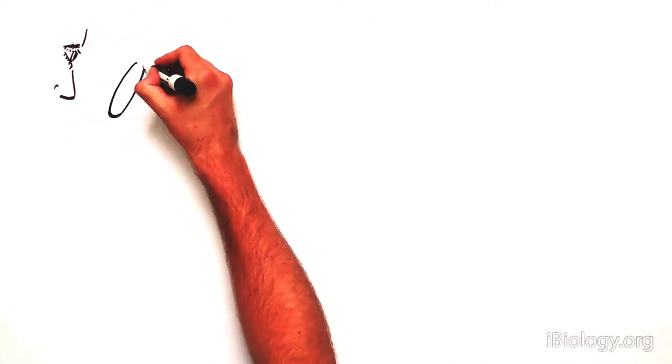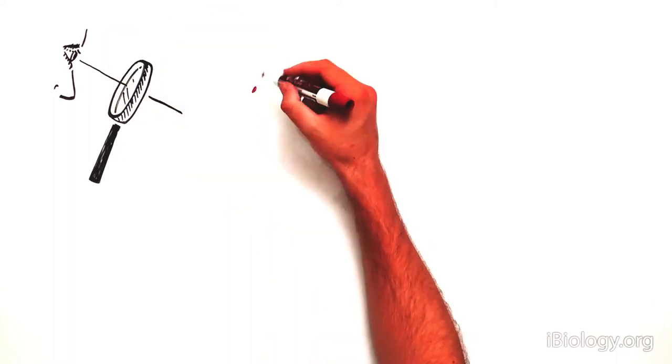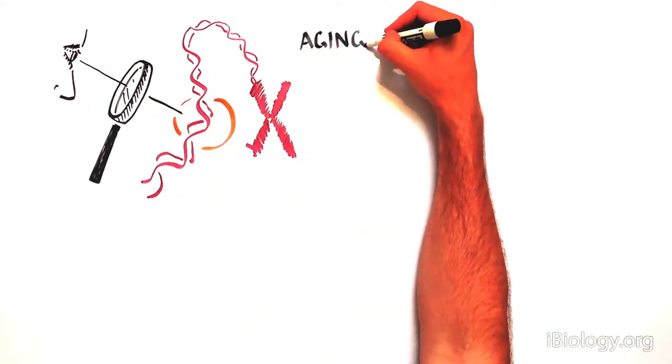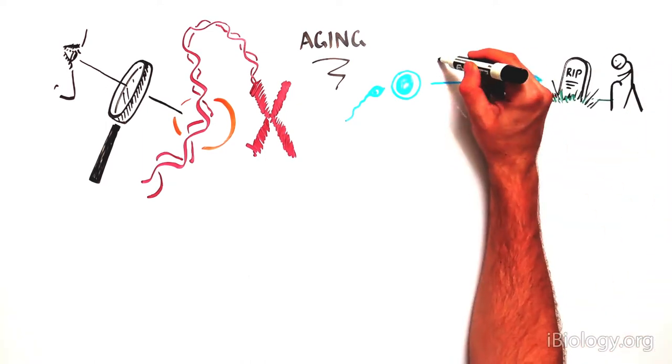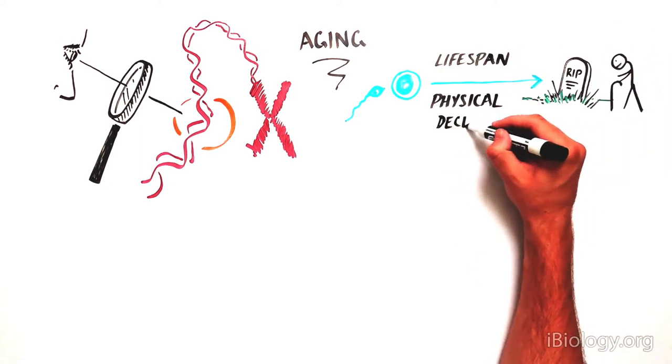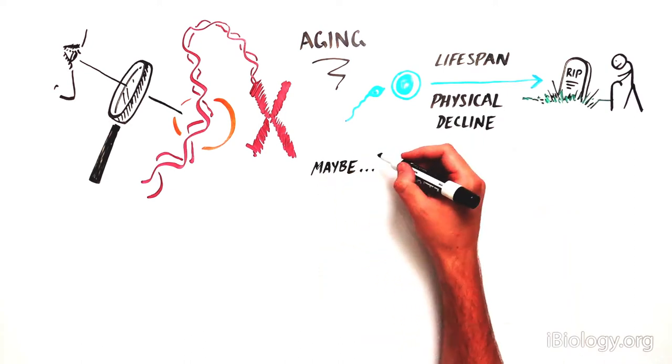Dr. Kenyon attempted to find the genes responsible for aging in humans. Aging in this case was defined as the organism's lifespan as well as the rate at which it experienced physical decline.